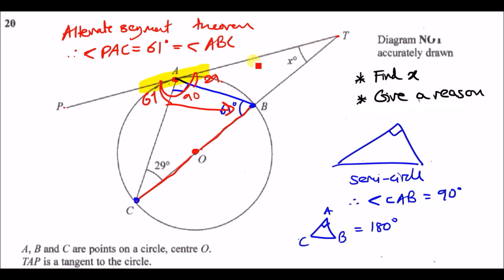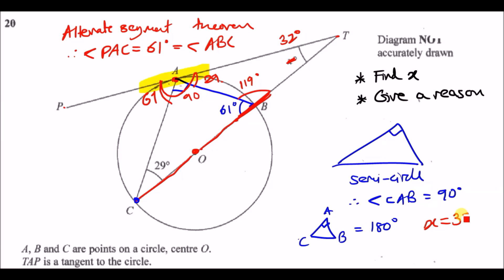In triangle ATB, angles at B and T are needed. The angle at B along the straight line: 180 − 61 = 119°. Triangle ATB has angles 29°, 119°, and x. Since all angles in a triangle sum to 180°: x = 180 − 29 − 119 = 32°. So x equals 32 degrees.